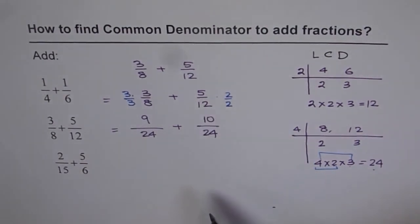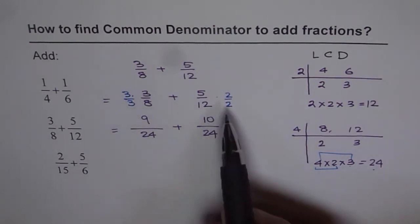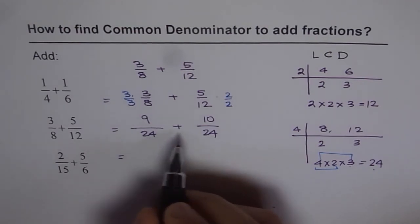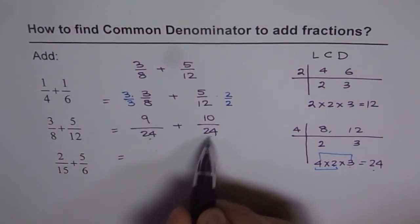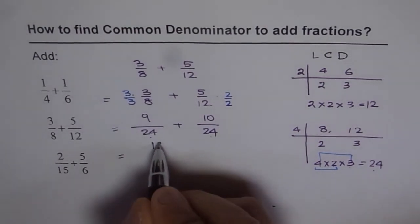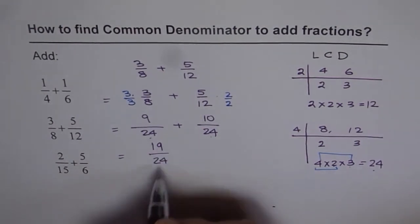These are equivalent fractions since we multiplied by same number in numerator and denominator. Now we can add them since their denominators are common. So we get 19 over 24 as our answer.